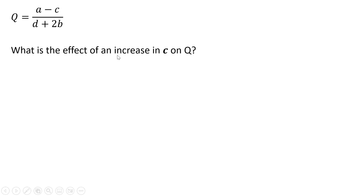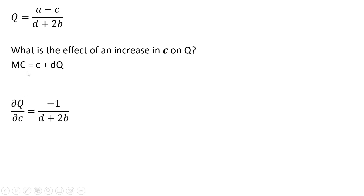Now what is the effect of an increase in C on Q? Recall, C is just a constant in our marginal cost equation. So what happens if that increases — what happens to the profit maximizing output level? We're going to take the partial derivative of this profit maximizing output equation with respect to C, and we get back the following result: minus 1 over (D + 2B).